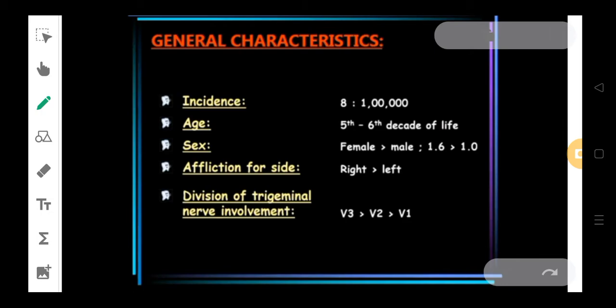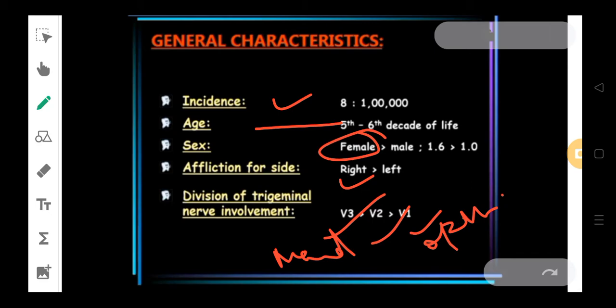Moving ahead to some general characteristics to be kept in mind. It is a very rare condition, so you can see the incidence is so less. Age usually is the 5th and 6th decade of life. Gender predilection, females are a little more affected than males. Affliction of the side, right side is more affected than the left side. And then we talk about the division of the trigeminal nerve. There are 3 parts or 3 branches of the trigeminal nerve. The mandibular branch is going to be most affected and ophthalmic to be least affected.